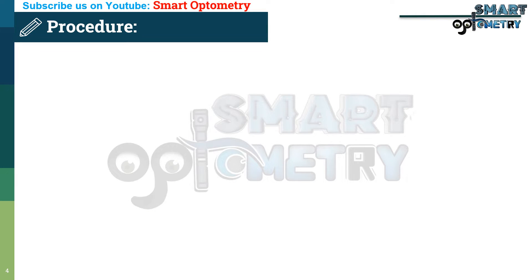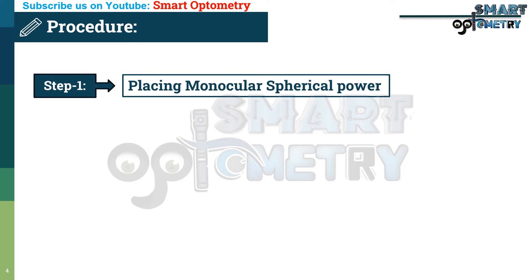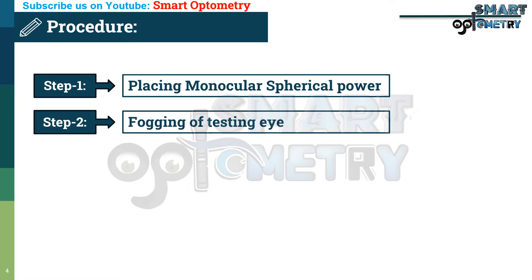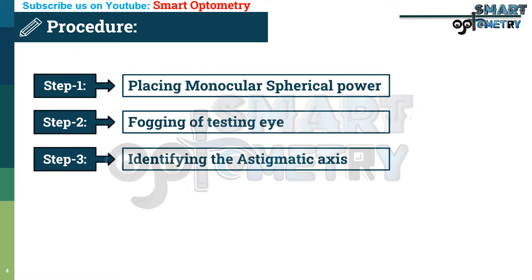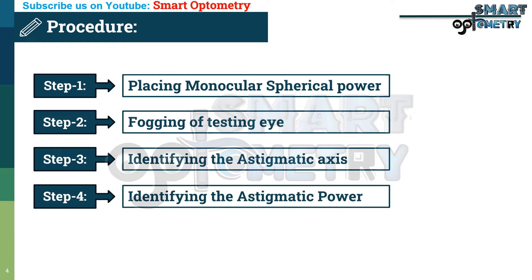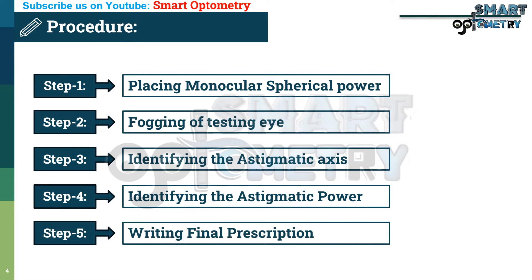Now let's see the procedure of the test. The procedure can be divided into the following steps: Step 1, placing monocular spherical correction; Step 2, fogging of the testing eye; Step 3, identifying astigmatic axis; Step 4, identifying astigmatic power; and Step 5, writing the final prescription.